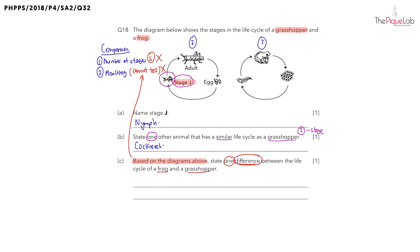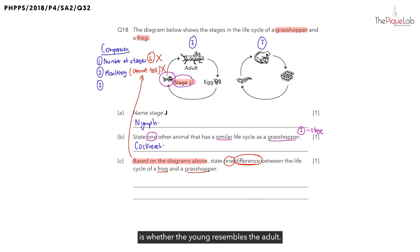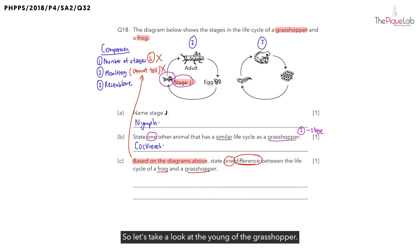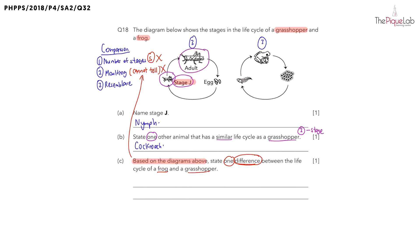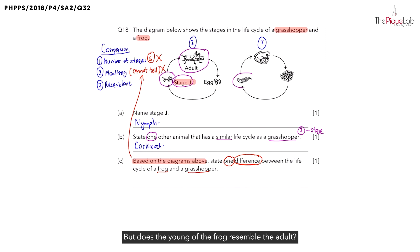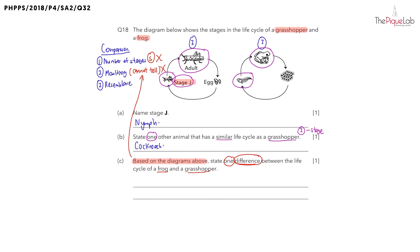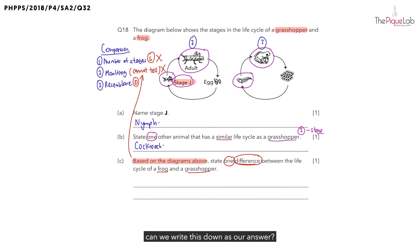The third way we can compare is whether the young resembles the adult — we call this resemblance. Does the young of the grasshopper resemble the adult? Definitely. But does the young of the frog resemble the adult? No. So this is a difference between them. Since this is a difference that we can observe from the diagram, we can write this down as our answer.